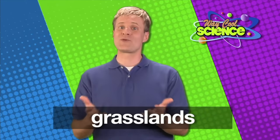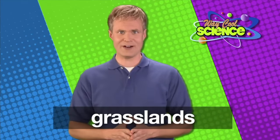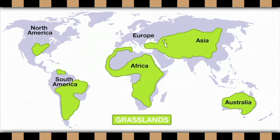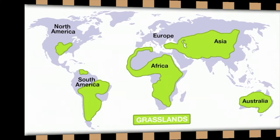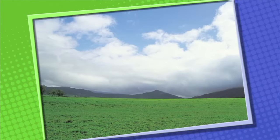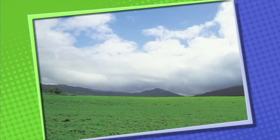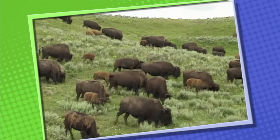The next habitat we're going to talk about is called the grasslands. Fire up the rider mower and let's go! We find grasslands in North America and South America, Africa, Europe, Asia, and Australia too. Grasslands are found on every continent except Antarctica. Grasslands are typically large, wide-open spaces. Most plants found on the grasslands are grasses. There are very few trees found in the grasslands because there isn't enough rain.